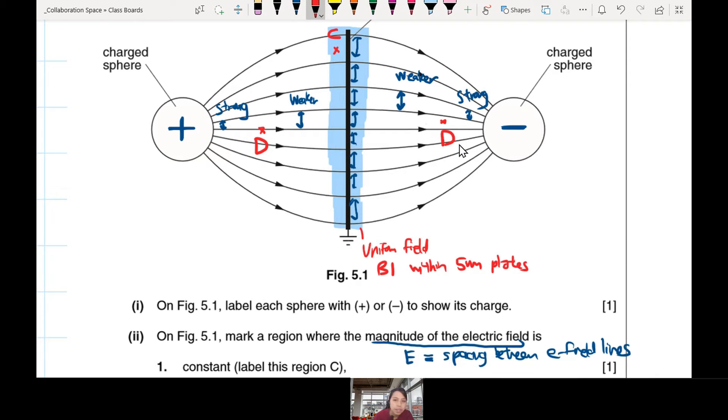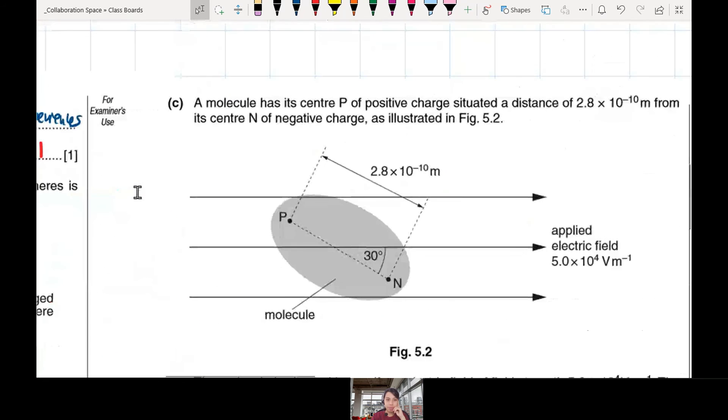Either way also can, on either side. It can be anywhere, doesn't have to be in between, as long as you can draw here. As long as it is not the same area C, that's okay already. C is near the plate, so anywhere outside this whole area can. So remember how to see field strength from diagram: the lines how close together, very close together means very strong field, very far apart very weak field. Now we go to the next part, have to do calculation.